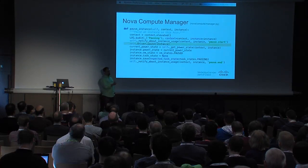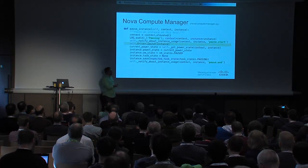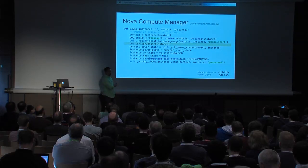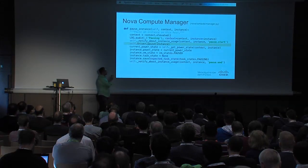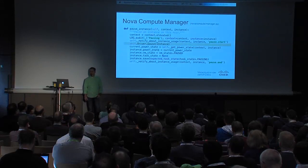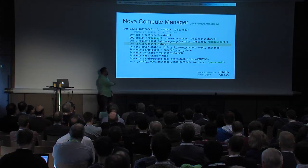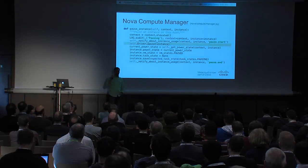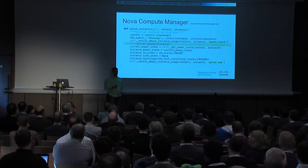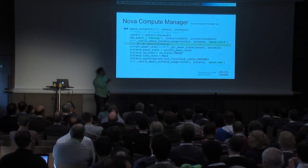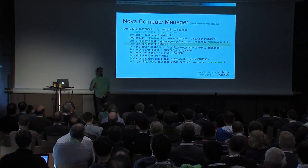If you go look at the manager code and trace it down to the pause operation — this code is pulled literally from upstream Icehouse — you can browse the GitHub repository and find this section of code. The part highlighted is driver.pause. The driver object is instantiated for you and it's going to call the LibVirt driver. All it's doing is calling .pause, which calls the pause method in the driver object and passes the instance into it. That's it.